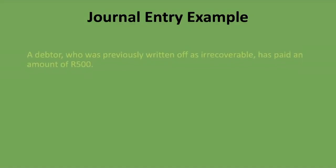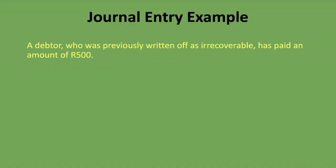Now, how do you do a journal entry when you have a bad debt recovered? Here's a scenario: a debtor who was previously written off as irrecoverable has paid an amount of 500 rand, and we are asked to journalize the entry. We thought this person was not going to pay us anymore and we wrote it off as bad debt, making it an expense. Now they have paid us 500 rand. I hope you know your journal entries — your debits and credits and how they work. If not, you'll find a link to a lesson in the description below.